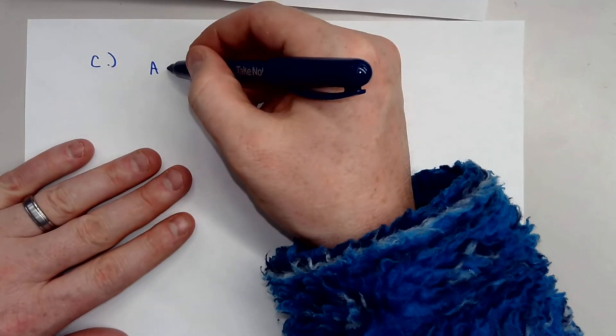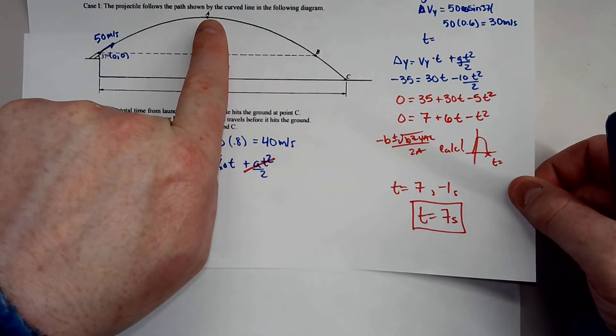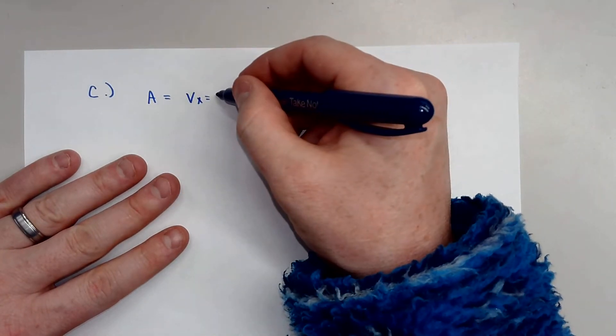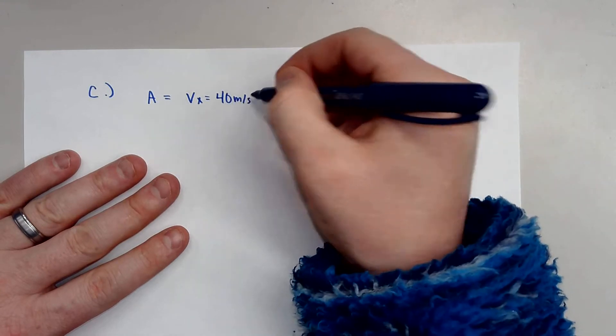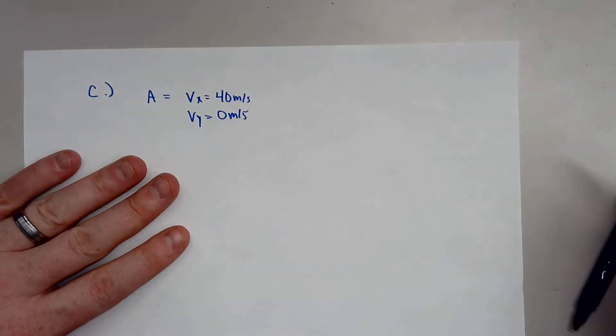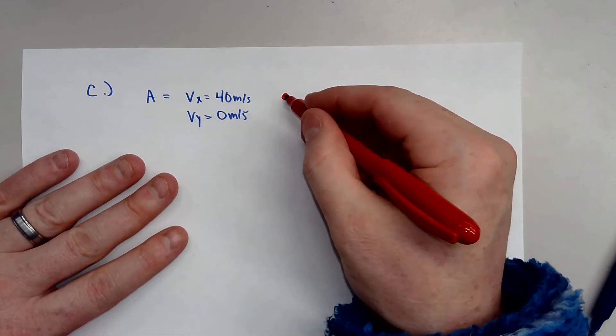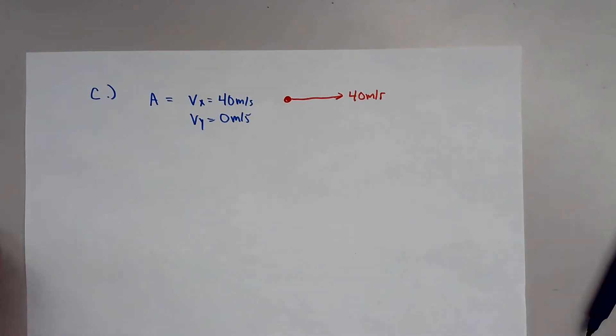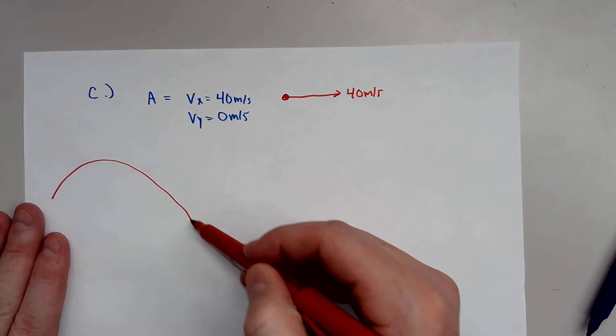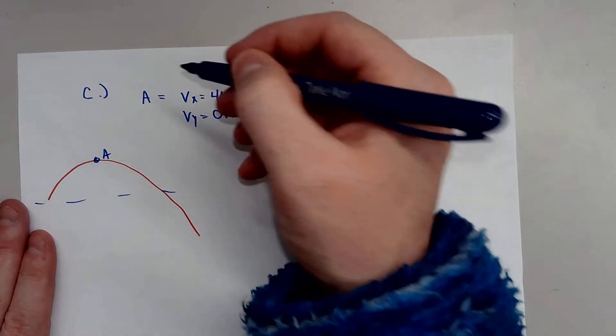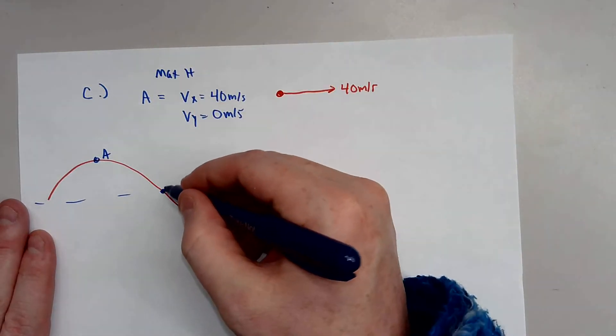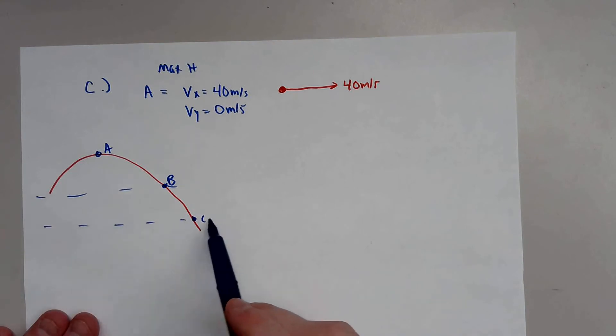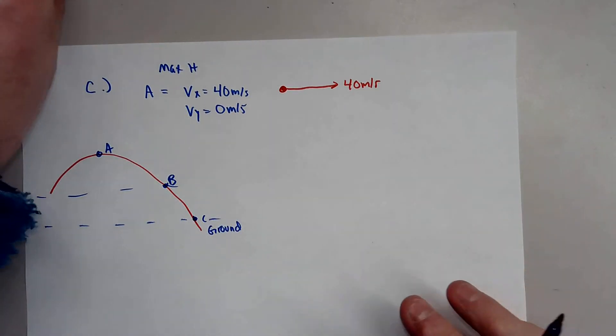So at point A, we're coming back to this drawing. The projectile is at its max height. So the velocity in the x direction will remain constant. So that means we have 40 meters per second, and the velocity in the y direction will be 0 meters per second. That means if we draw this vector out, we just get 40 meters per second. So the projectile has a speed of 40 meters per second at position A. Remember, A is at the max height. So this is max height.